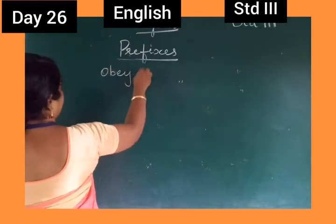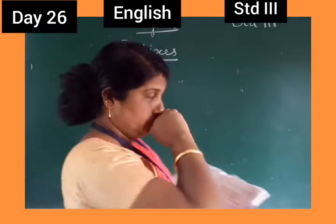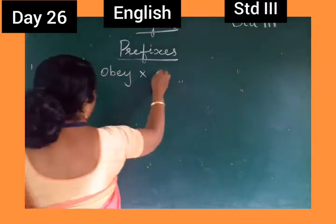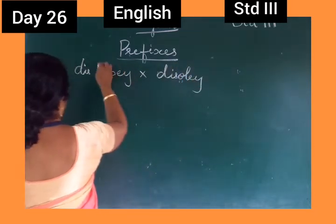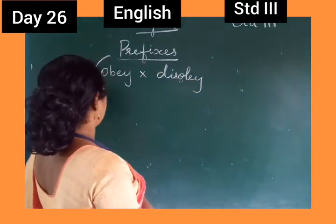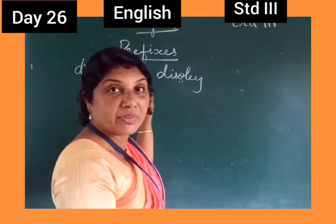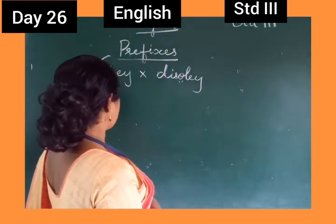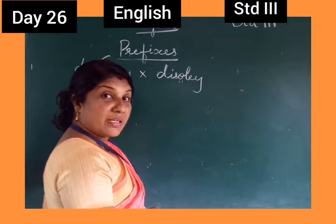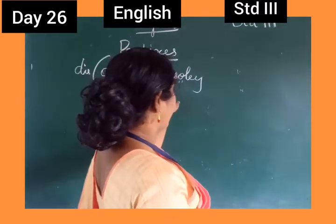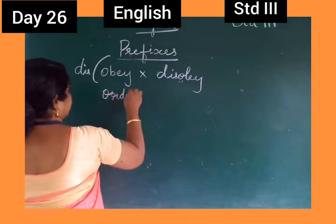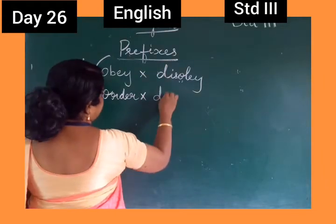Another one is obey. What is the opposite of obey? You should add 'dis' at the beginning of this word. So you will get a new word — the opposite of obey: disobey. Then order — again you should add 'dis', so you get disorder.